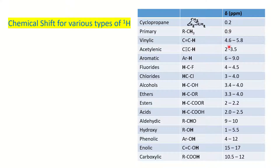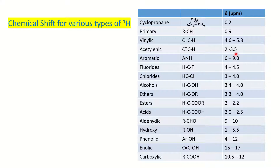For vinylic protons, the value varies in the range of 4.6 to 5.8 depending on the environment of the molecule. These values are not fixed — they depend on the structure and fall in the given range plus or minus based on factors affecting chemical shift. For acetylenic protons the value is 2 to 3.5, and for aromatic protons the range is 6 to 9.